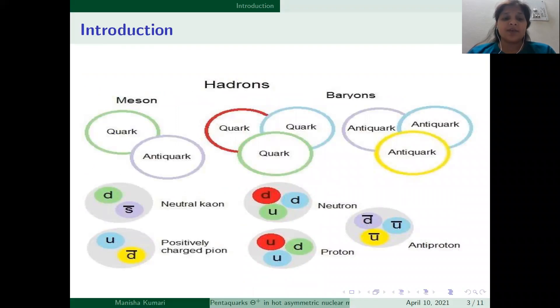Quarks combine to form baryons and mesons. Baryons are made up of three quarks or anti-quarks. For example, proton is made up of two up quarks and one down quark.